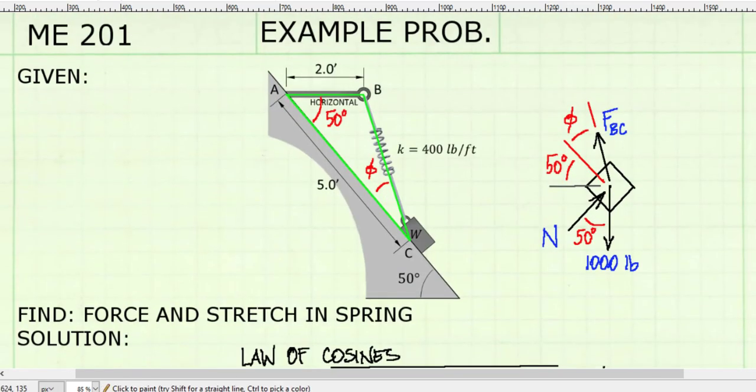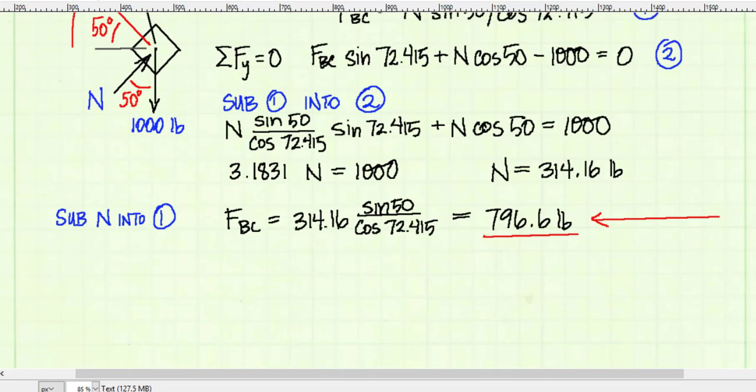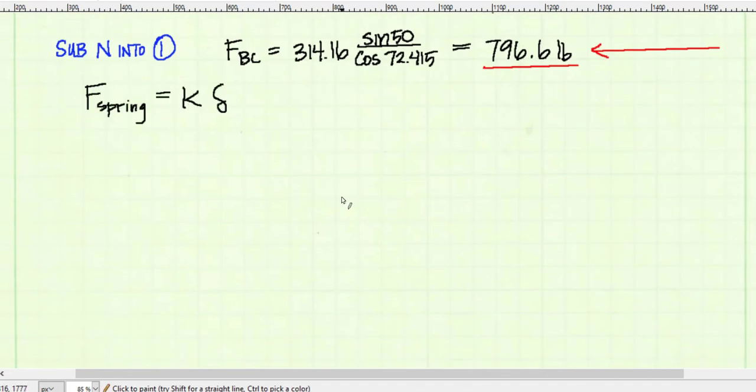We were also asked to find the stretch in the spring. So using the force in the spring, and the spring constant k equal to 400 pounds per feet, we can solve for the stretch. Here's the spring equation. Our force is going to be force BC. k is 400 pounds per feet. Delta is the stretch, or the displacement, of the spring.